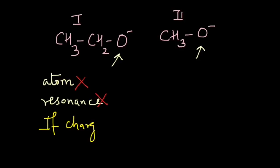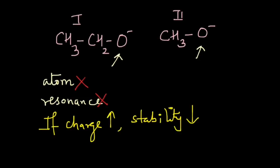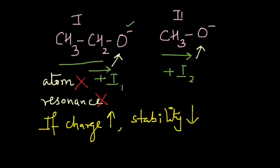Here is the rule you need to remember: if charge increases, then stability decreases. So if something increases the negative charge, the stability will decrease. In species one, the ethyl group shows a +I effect, increasing the negative charge on the oxygen atom. Similarly, the methyl group in species two also shows a +I effect, increasing the negative charge on oxygen. So stability is decreasing in both species, but the inductive effect of the ethyl group is greater than that of the methyl group.